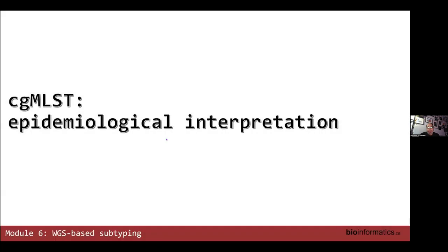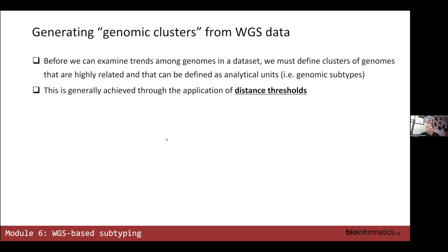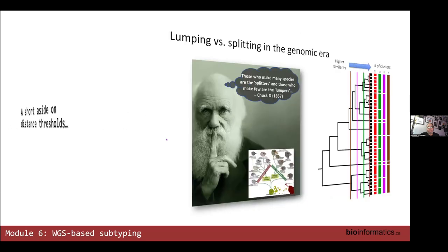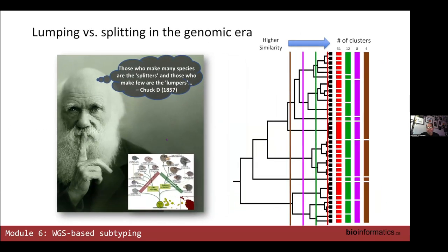When trying to interpret cgMLST data in the context of epidemiology, I'm a big believer in generating genomic clusters from whole genome sequence data through the application of distance thresholds. Before we talk about that, a bit of an aside on thresholds: there's the apocryphal story that Charles Darwin, in a letter to one of his colleagues, talked about the concept of splitters and lumpers — is it better to split things and say this is a separate species, or to lump similar things together?